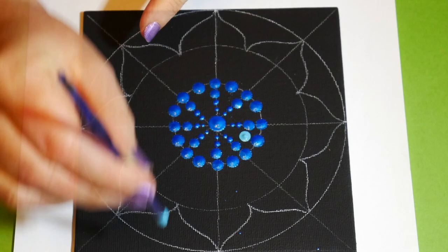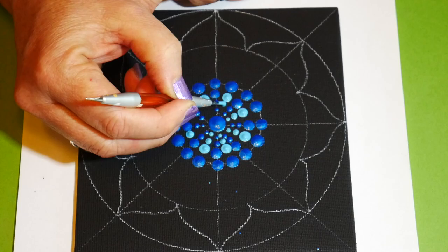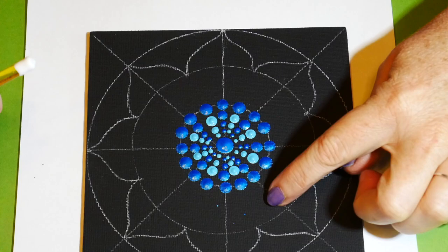And then I'll put a larger center dot in there. Now I'm going to fill in the space with a lighter blue, walking those toward the center dot as well.